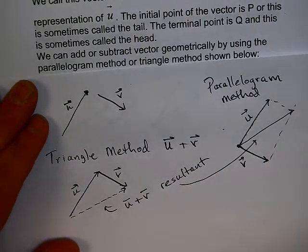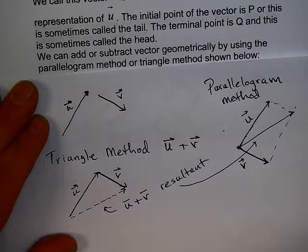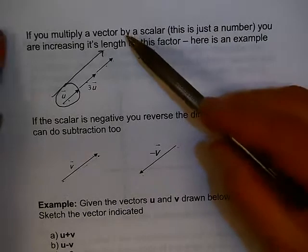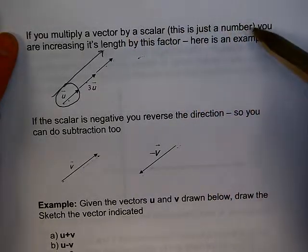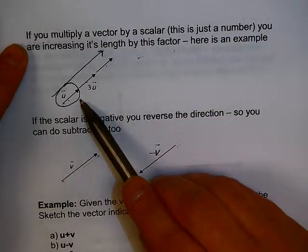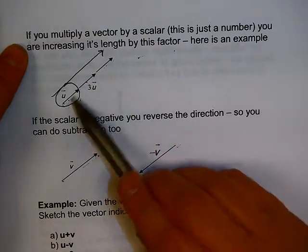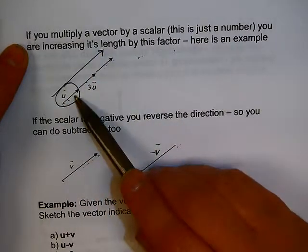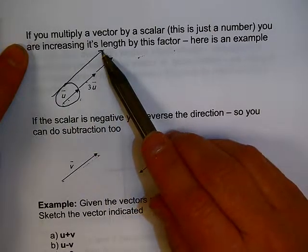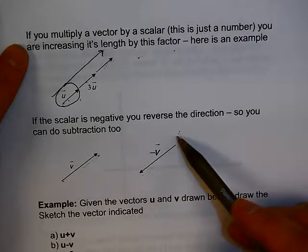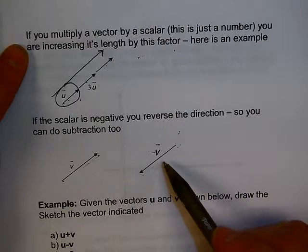If you multiply a vector by a scalar — just a number — you are increasing the length of the vector by that factor without changing its direction. For example, the vector 3u would be three times the length of u in the same direction but with much larger magnitude. If a scalar is negative, you reverse the direction. So you can do subtraction too — this might be vector v and this might be vector minus v.